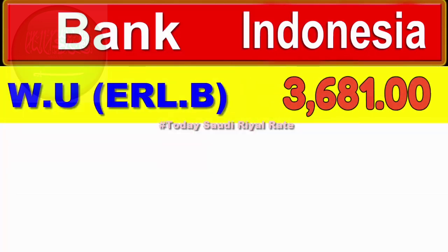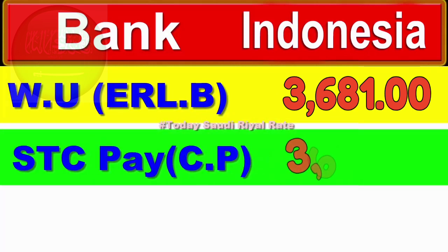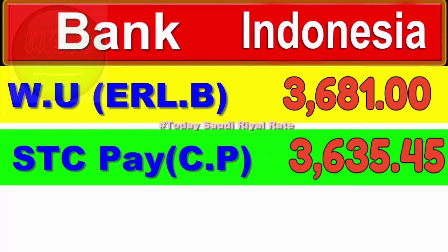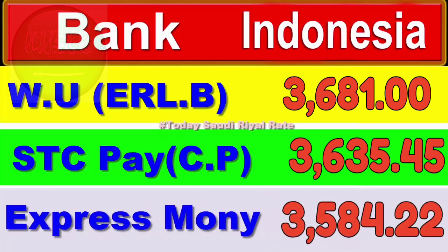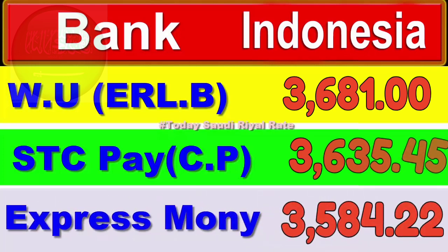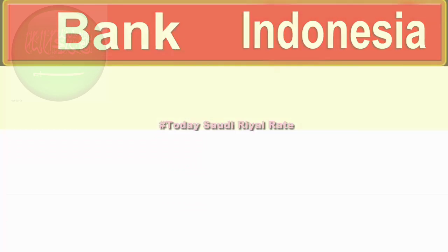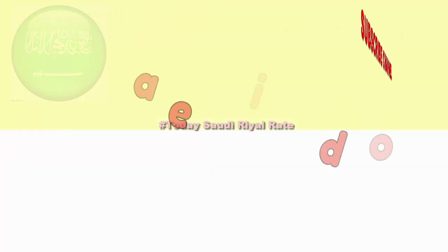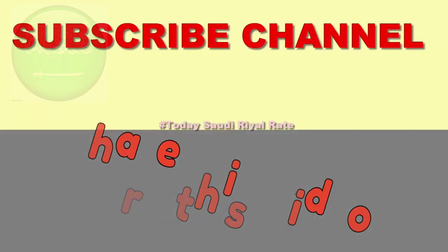Western Union Irsal Bank rate is 3681 Rupiah 0.00 sen. SDC Track Pay cash pickup rate is 3635 Rupiah 0.45 sen. MoneyGram rate is 3584.22 sen. Access Money rate — so this is the Saudi real rate. Please share this video.